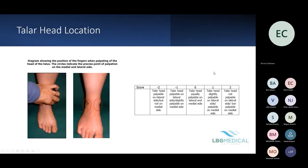The first component is talar head palpation. You palpate with your fingers around the talar head — if you feel equally palpable on the lateral and medial side, you score a zero. If slightly more palpable on the medial side, you score a one. At the extreme, you won't palpate it on the lateral side at all but will feel it prominently on the medial side, and on the minus side the reverse applies.